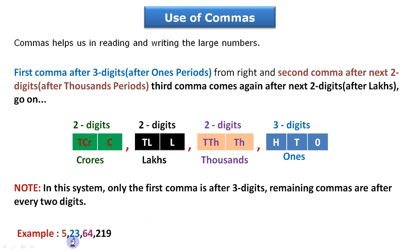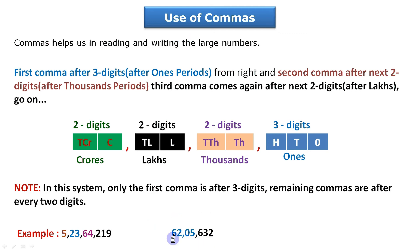Reading large numbers with commas is simple — just count the commas to know where to start. If there are three commas, start from crores. If there are only two commas, start from lakhs. Example: a number with two commas reads as sixty-two lakhs, five thousand, six hundred thirty-two. Zero fills the ten thousands place.